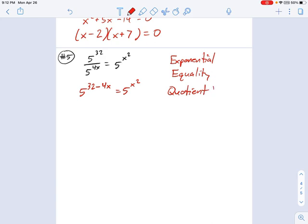And at this point, it's pretty easy to factor it if you just cross out the 5s on each side because of exponential equality. And now we have 32 minus 4x equals x squared. Well, rearrange a little bit, and we'll get 0 equals x squared plus 4x minus 32.